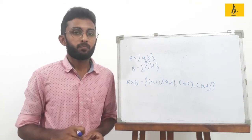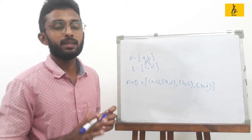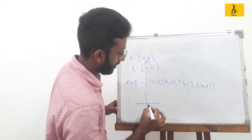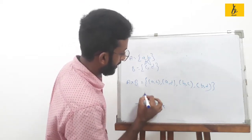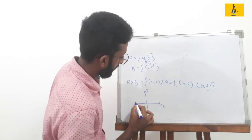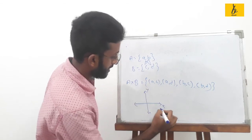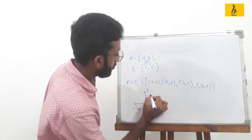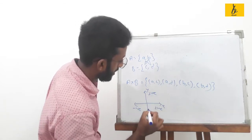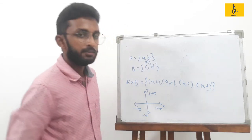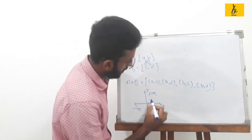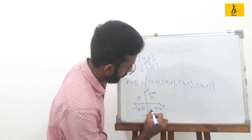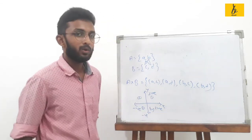Then, the coordinate system. If you have a pair, you can represent it on the coordinate system. In the coordinate system, this is the X axis and this is the Y axis. The X axis is positive and negative, and the Y axis is positive and negative. This gives us the first, second, third, and fourth coordinates — that is, the four quadrants.